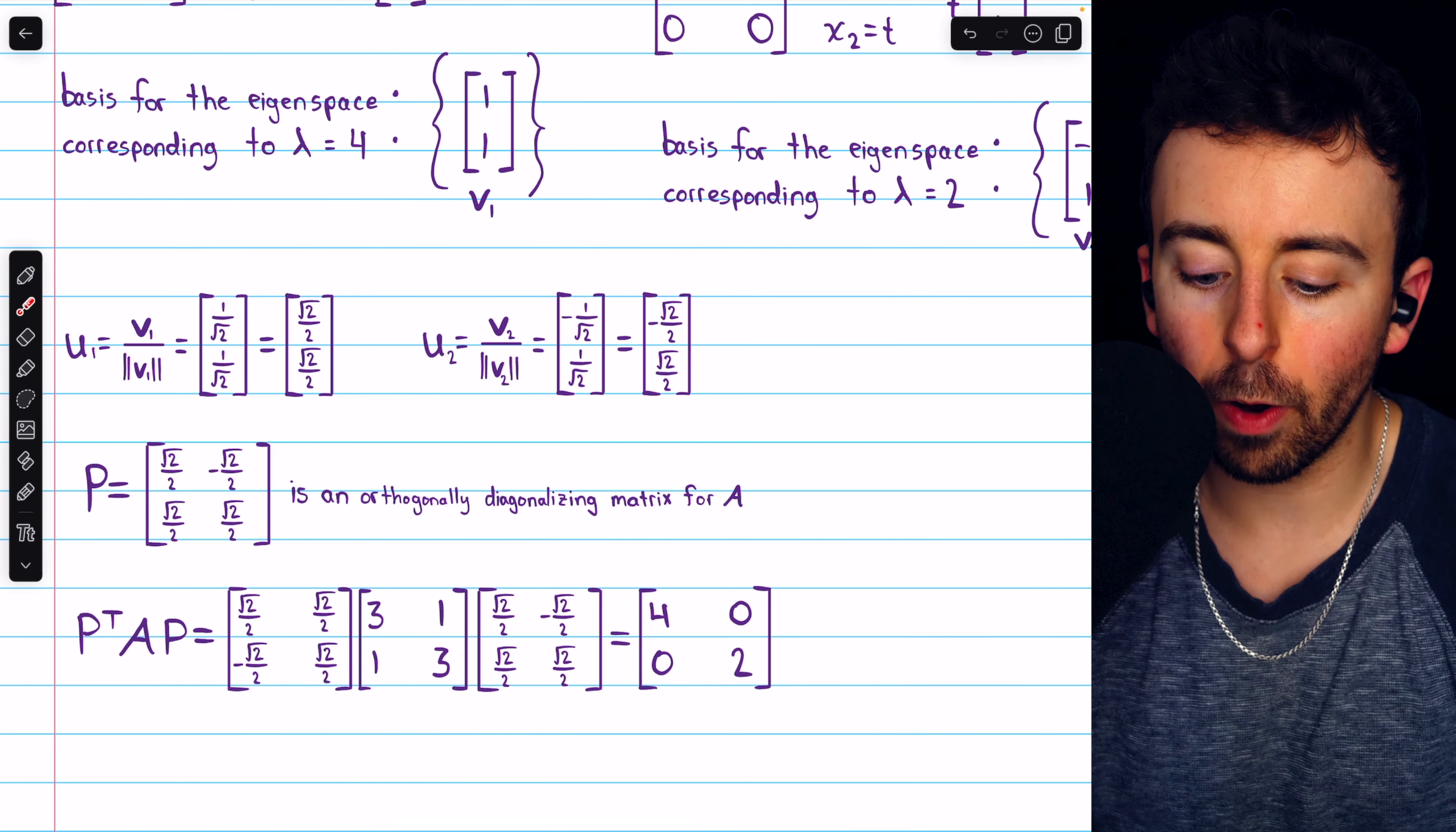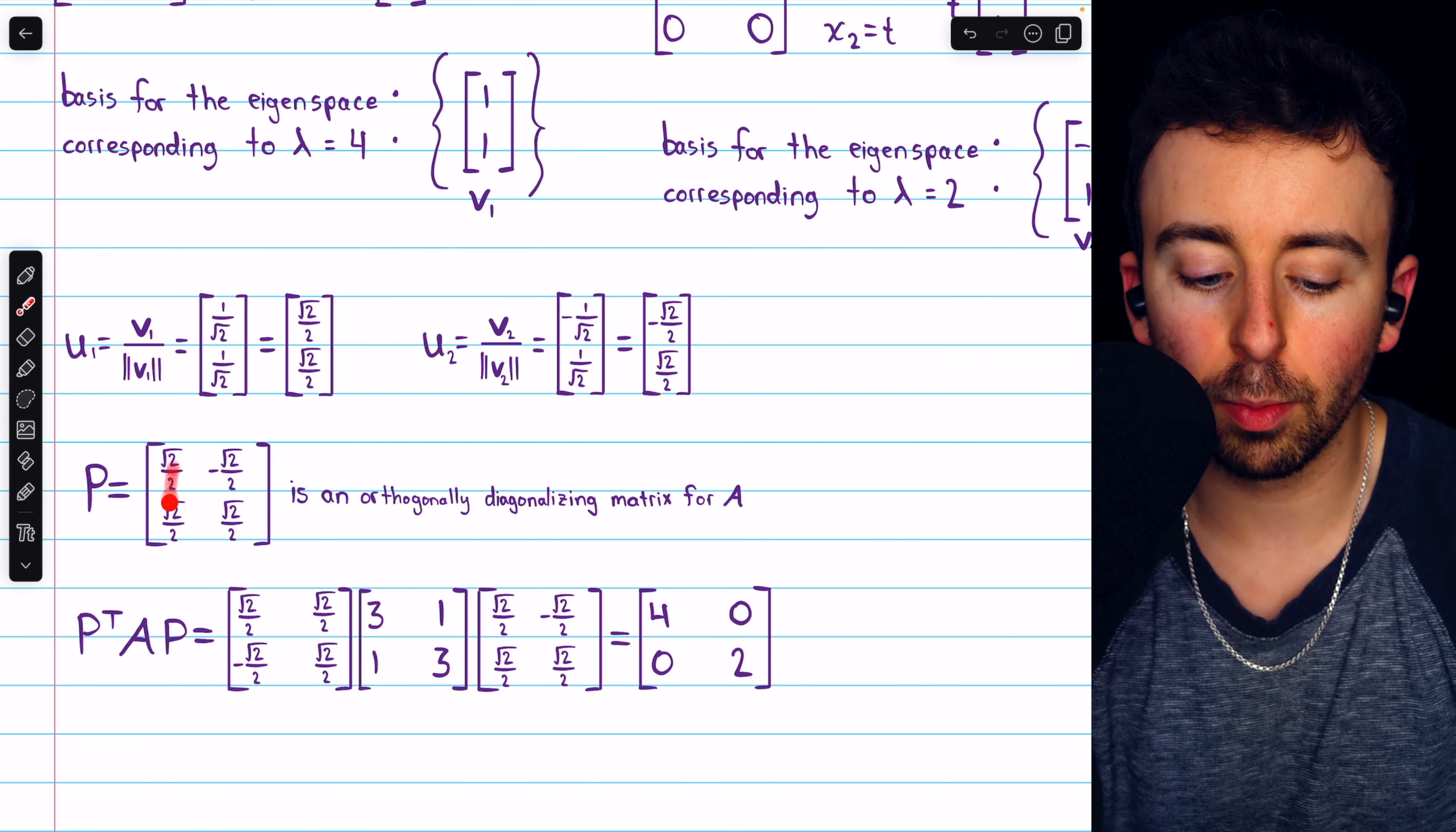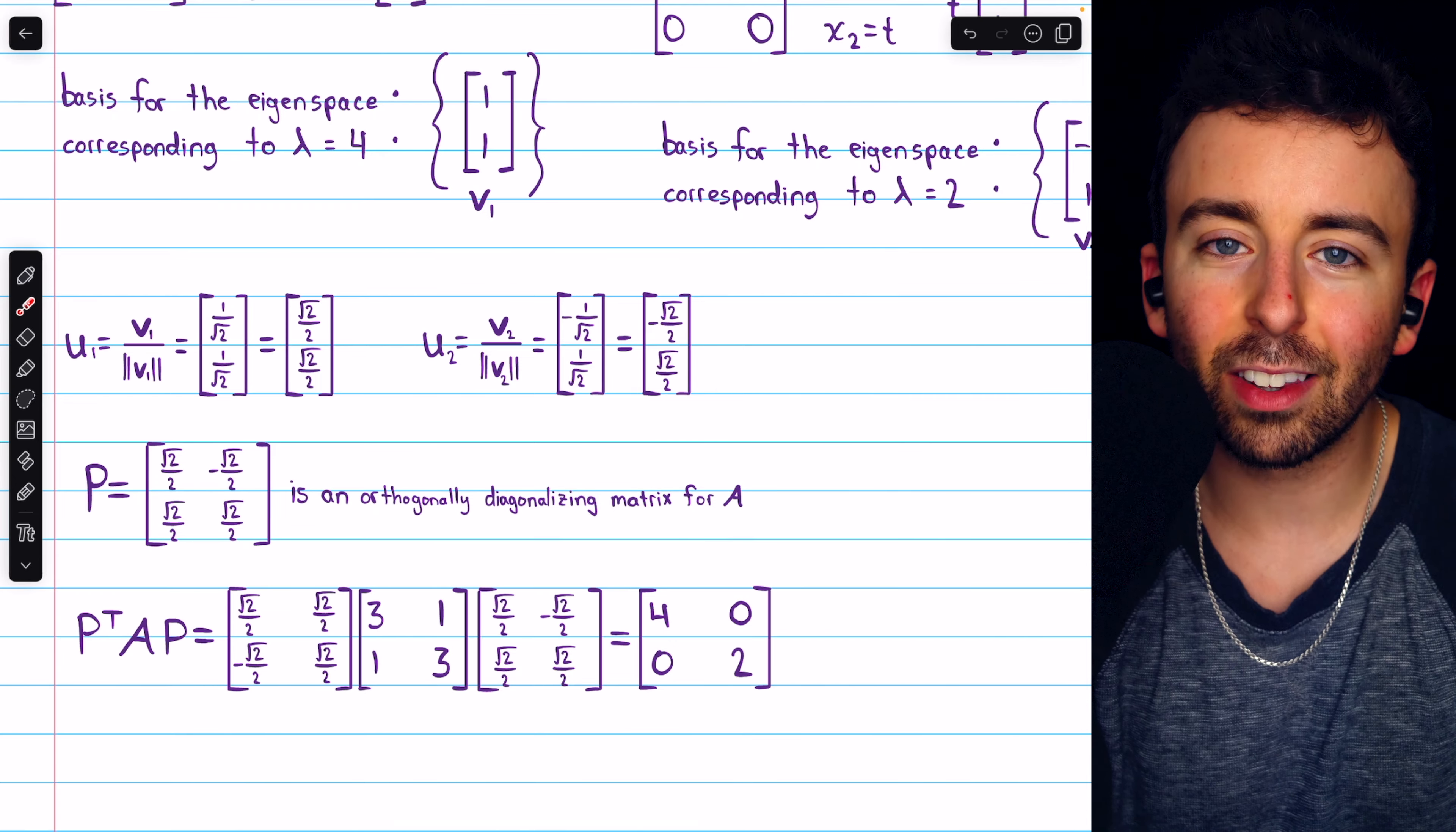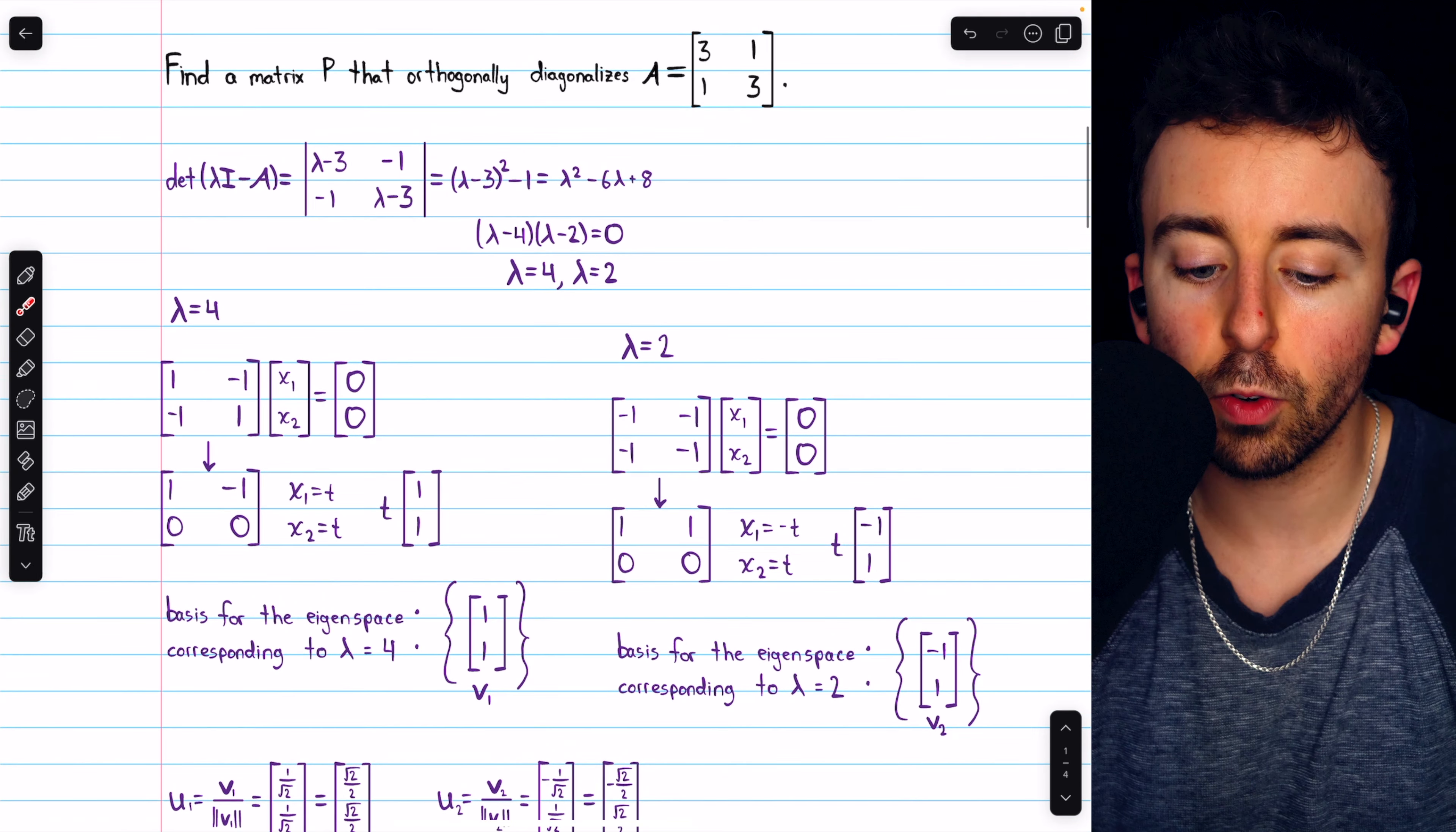The eigenvalues are in the order corresponding to the eigenvectors that were used to construct P. The first column of P is the eigenvector corresponding to 4. That's why 4 appears first in this diagonal matrix. So that's how to orthogonally diagonalize a 2x2 symmetric matrix.